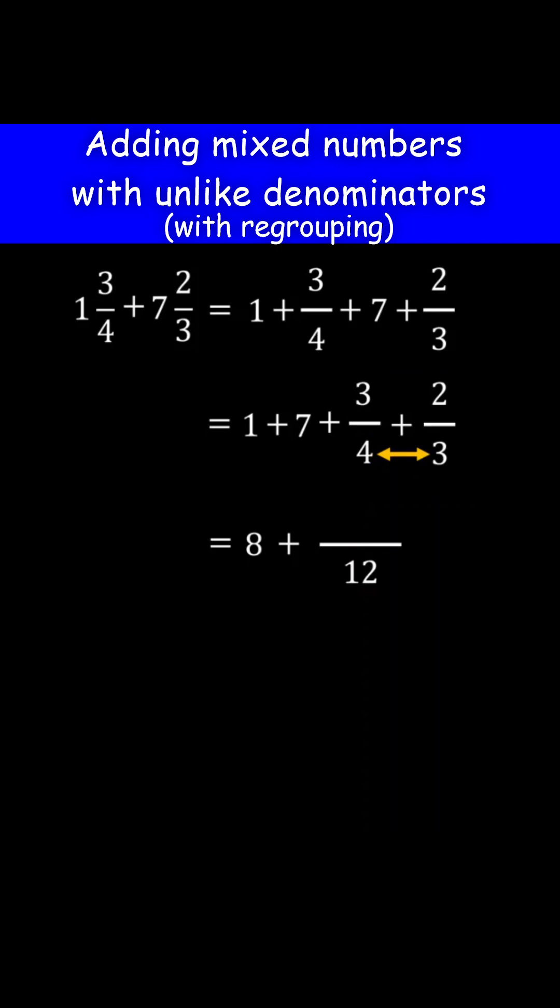Then cross multiply and add the products. 3 times 3 is 9. 4 times 2 is 8. Then add 9 and 8. 9 plus 8 is 17.